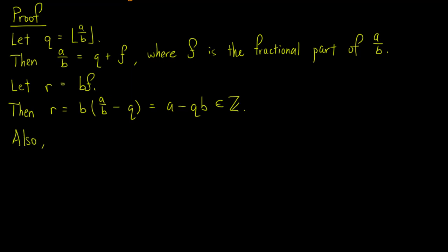Also, since f is greater than or equal to 0 and less than 1, we have bf is greater than or equal to 0 and less than b. This means that 0 ≤ r < b.